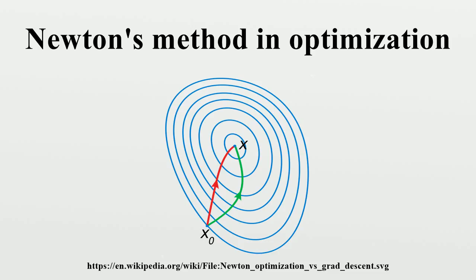Newton's method attempts to construct a sequence x_n from an initial guess x_0 that converges towards some value x* satisfying f' equals zero. This x* is a stationary point of f.